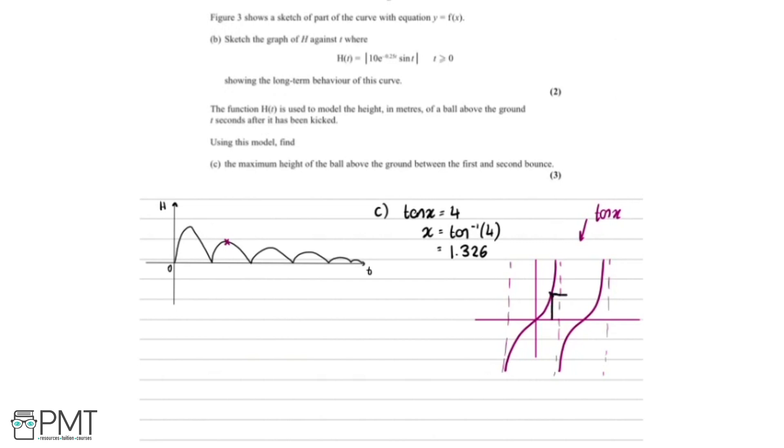But if our first solution is 1.326 radians, so about here. Our next solution, we can go along and it'll be here. And the tan graph repeats every 180 degrees. So because we're working in radians, that's every pi. So what I'm going to do is get from here over to here, I'm just going to add pi to this. So if we add pi, we get 4.47 to two decimal places. And now that's great.